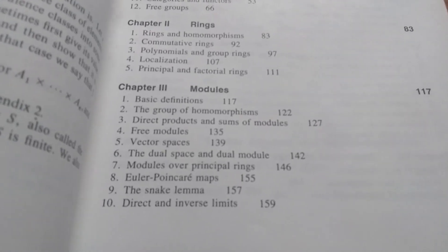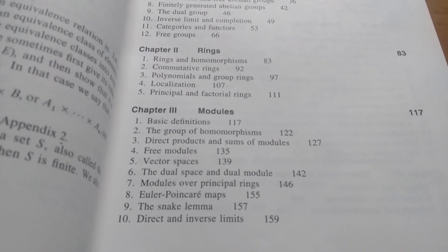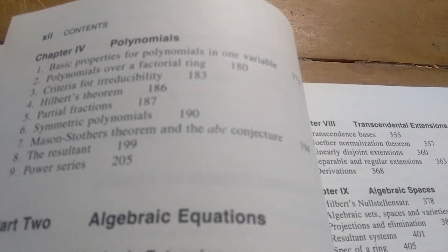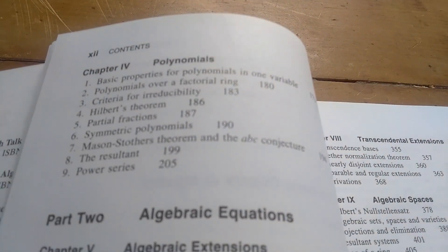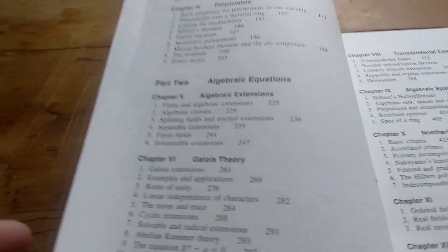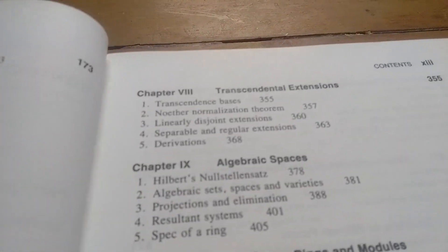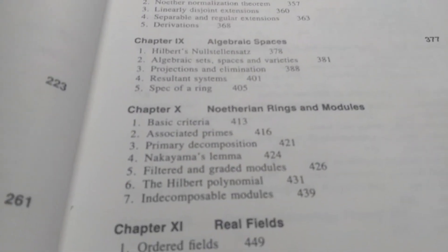Then he has a whole chapter on modules, an entire chapter on modules. Then he goes over polynomials, talks about even the ABC conjecture. What math book does that? Algebraic extensions, Galois theory, extensions of rings, transcendental extensions, algebraic spaces, Noetherian rings.